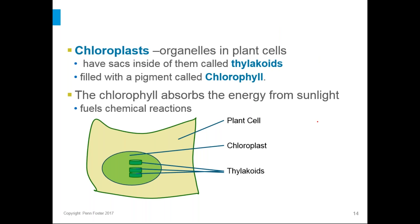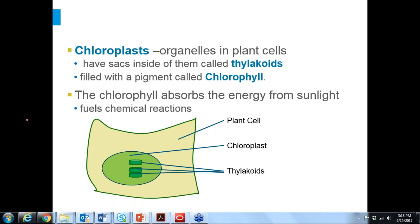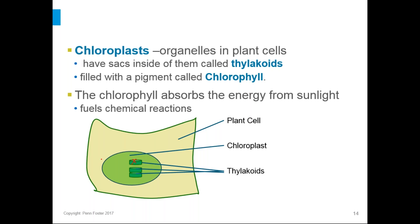Chloroplasts are the organelles in plant cells associated with photosynthesis, because this is where it happens. Chloroplasts have sacs inside of them called thylakoids — they're drawn as flat green sacs. The thylakoids are filled with a pigment called chlorophyll, which is what makes plants green. Chlorophyll's job is to absorb energy from sunlight and kick off these chemical reactions with that energy. The chemical reactions start happening on the thylakoid membranes.